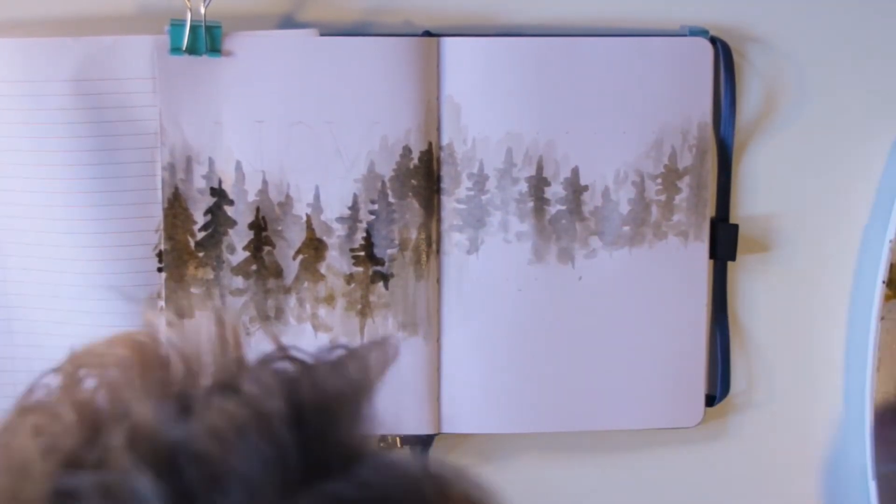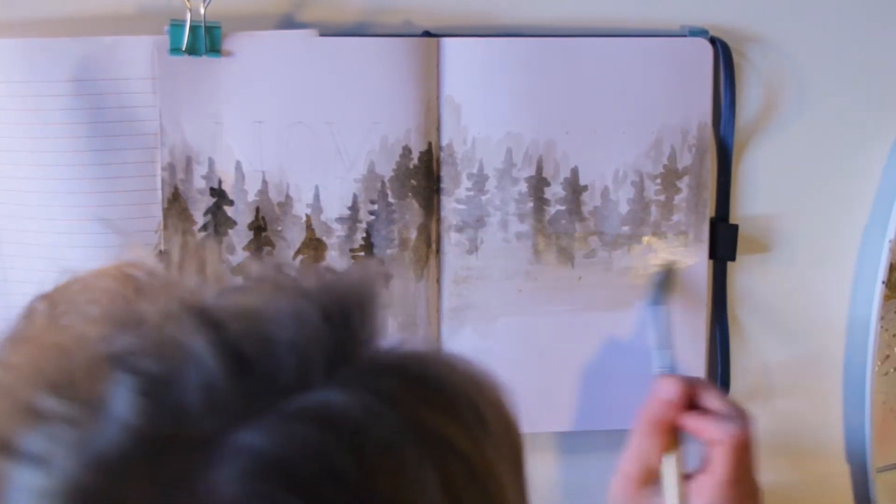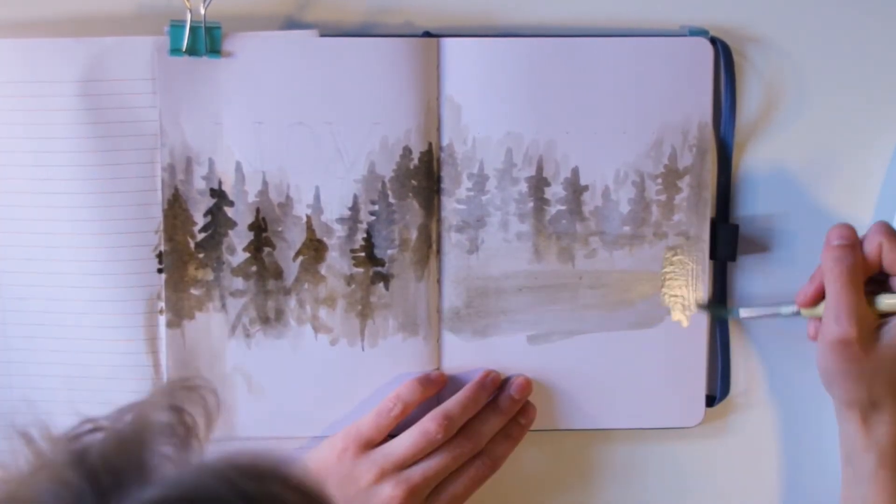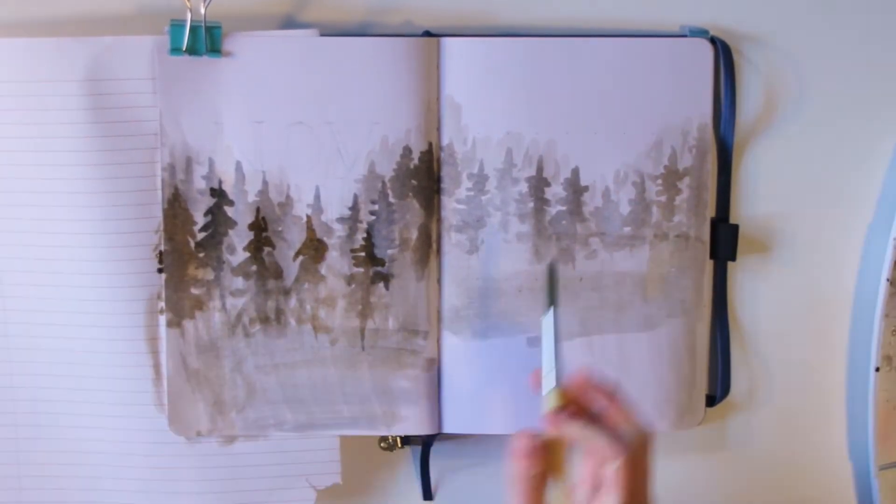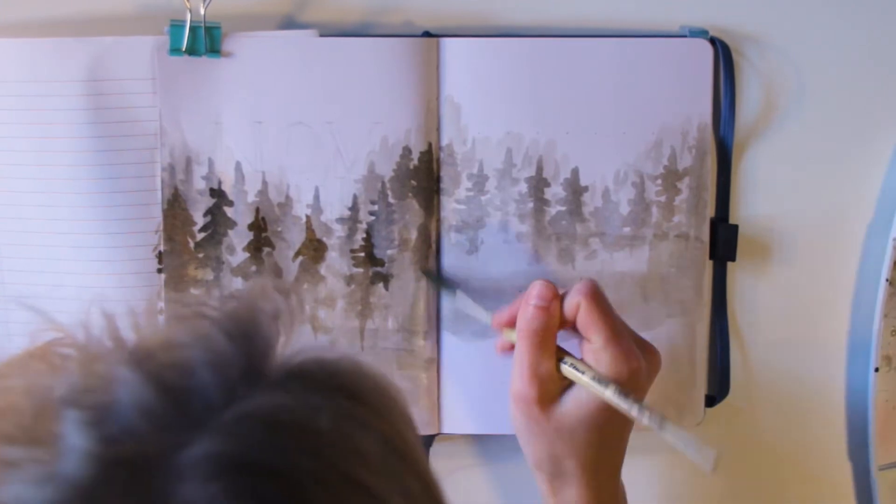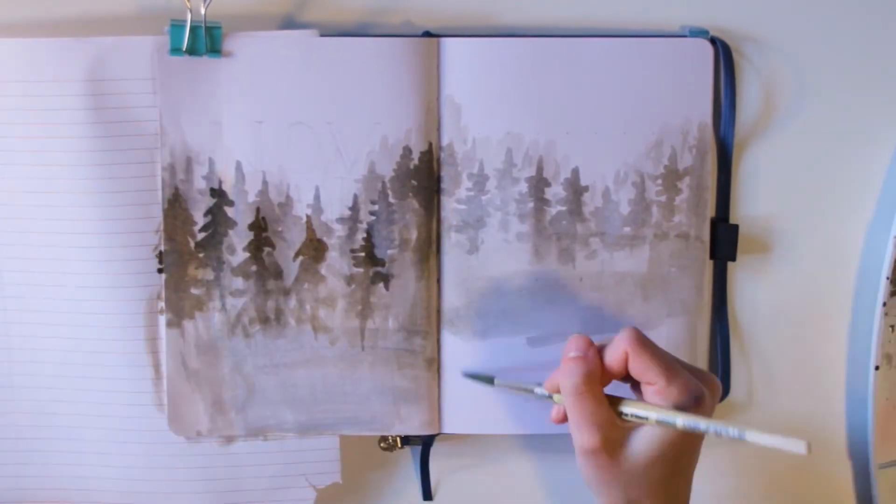So basically I just mixed up a very simple brown and gray in my watercolor set and I just used a little bit more brown or a little bit more gray to make different kinds of colors for each tree so they wouldn't all look the same.